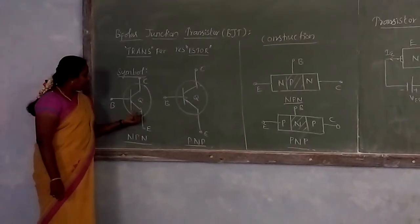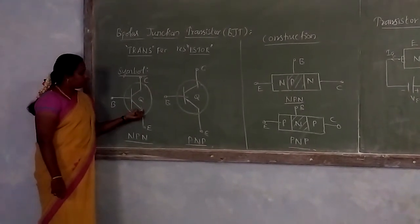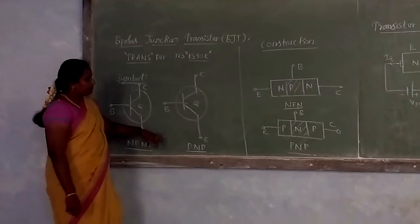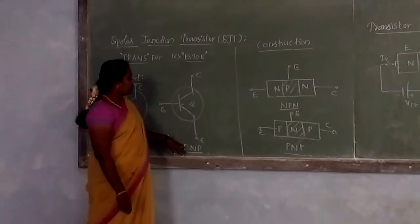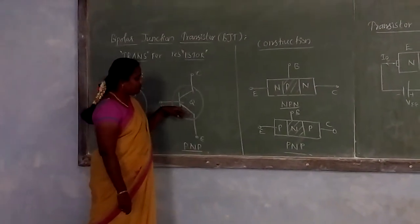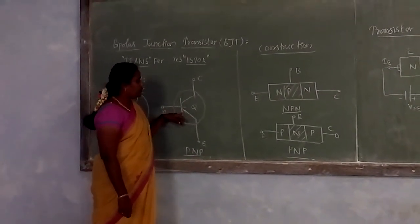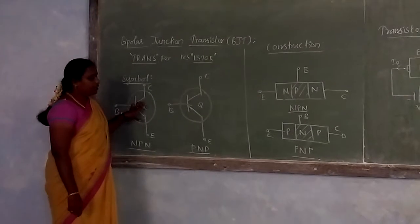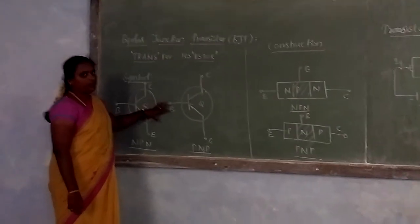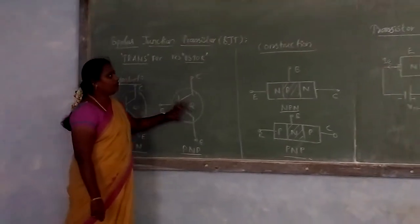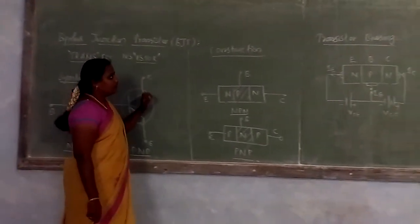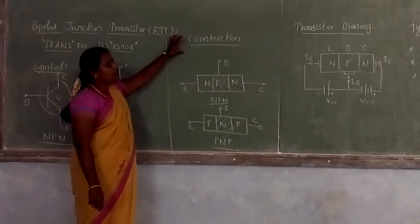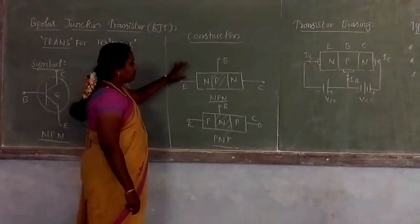For the NPN transistor, the current direction is outward, and for the PNP transistor, the current direction is inward. This is the major difference between NPN and PNP. Next we see the construction of transistors.